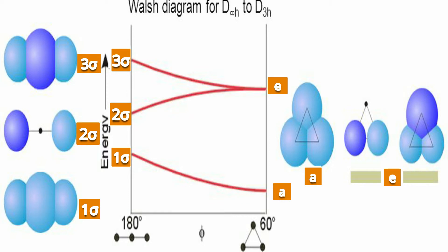Here is a Walsh correlation diagram — what does it mean? It is just a variation of energies of prospective orbitals with change in bond angle. As bond angle changes, interaction changes, and consequently, energetics changes. The graphical presentation of variation in energy with change in bond angle is none other than Walsh correlation.